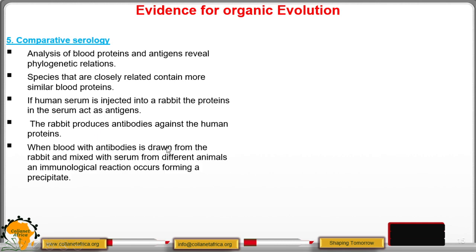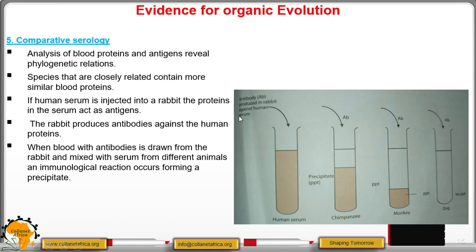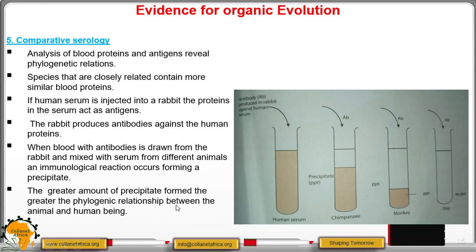The immune system of the rabbit produces defense proteins called antibodies against the antigens. When blood with antibodies is drawn from the rabbit and mixed with serum from different animals, an immunological reaction occurs, forming a precipitate or suspension. The antibodies from the rabbit are mixed with serum of different animals. Mixed with human serum, there is a lot of precipitate; with chimpanzee serum, the precipitate is reduced; with monkey serum it reduces further; and with dog serum, there is no precipitate at all. The greater the amount of precipitate formed, the greater the phylogenetic relationship between that animal and the human being.